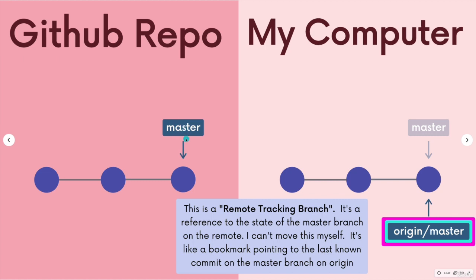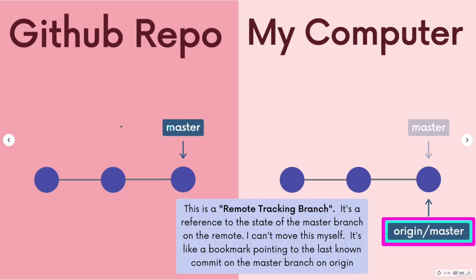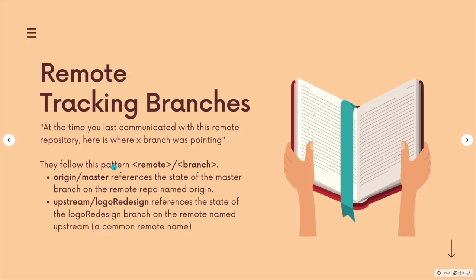In other words, wherever this is pointing, just like any other branch reference — I like to visualize a repo as a big book with a bunch of bookmarks in it. So these two bookmarks will start at the same spot, but they might diverge as I do more work and make commits on the master branch locally. To reiterate: the term remote tracking branch — think of it as the bookmark or pointer that remembers, at the last time you communicated with this remote repo, where the master branch or main branch was pointing on that GitHub repo on origin. Git names them for us following the pattern remote slash branch name.